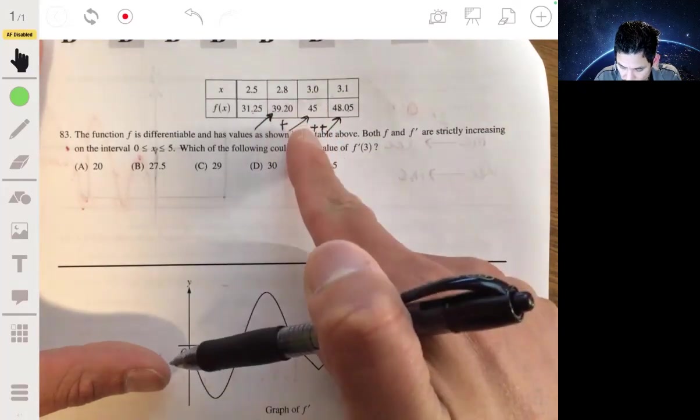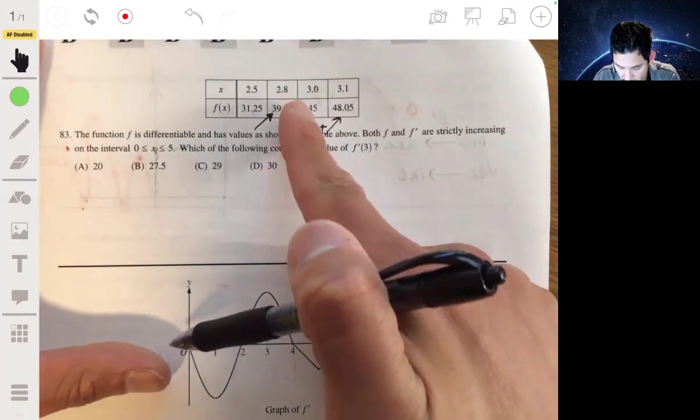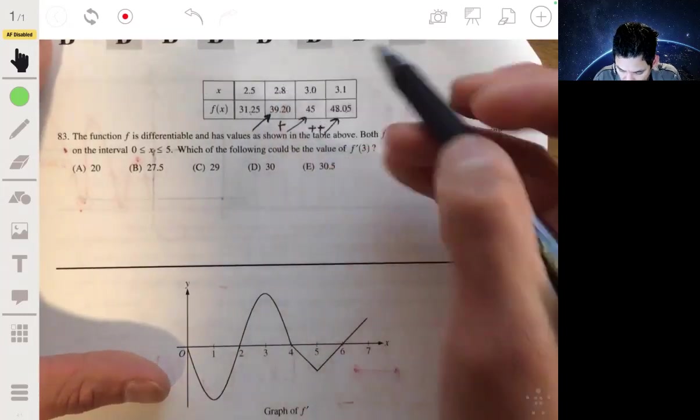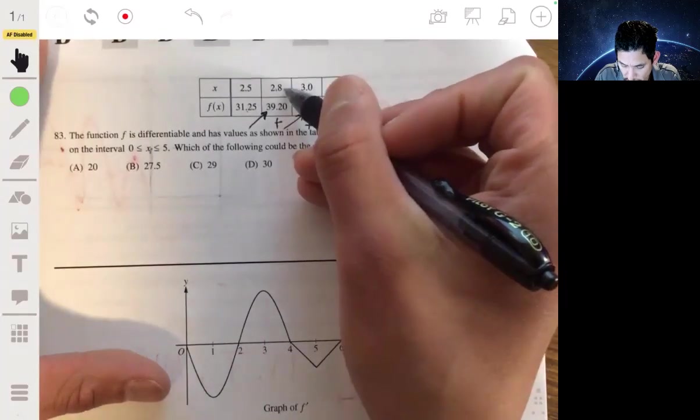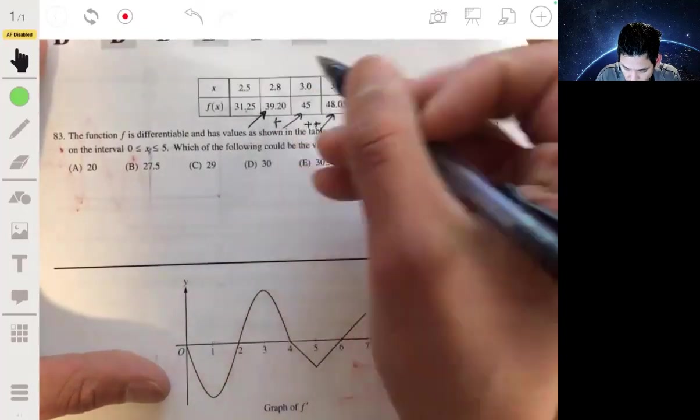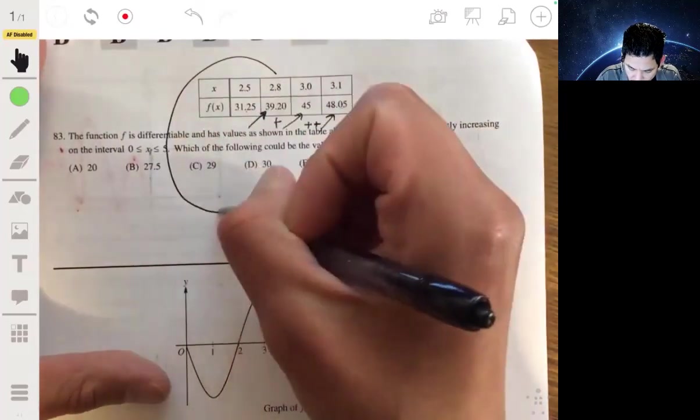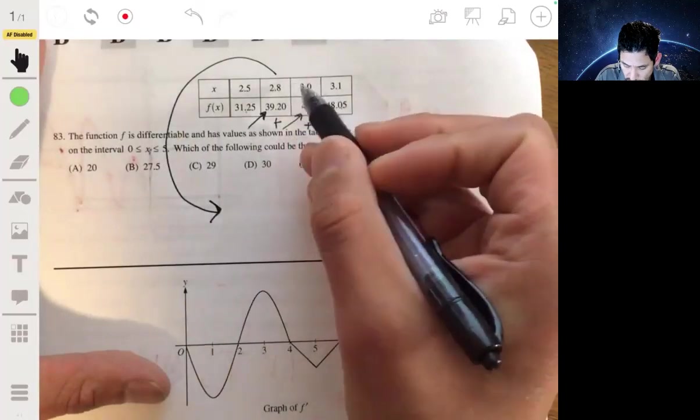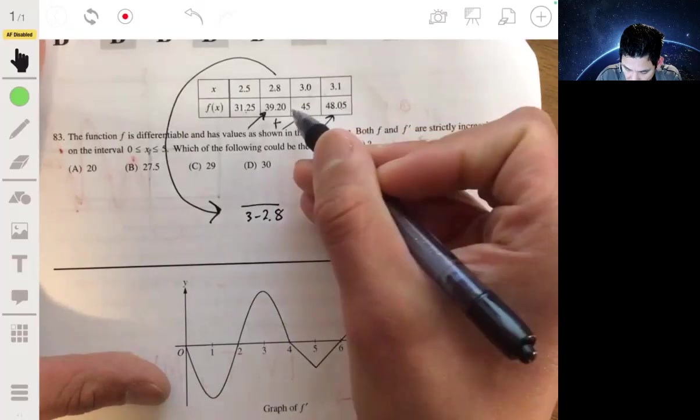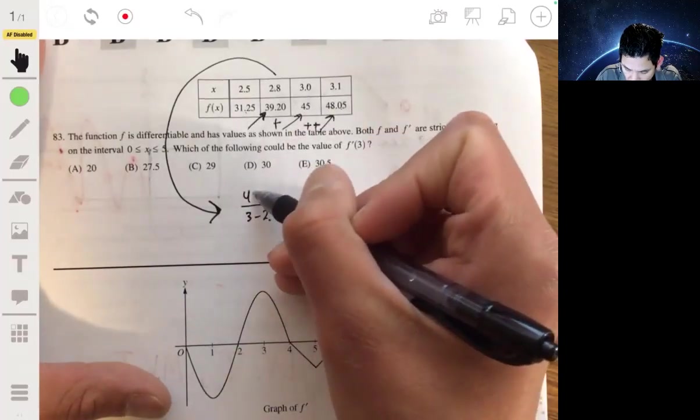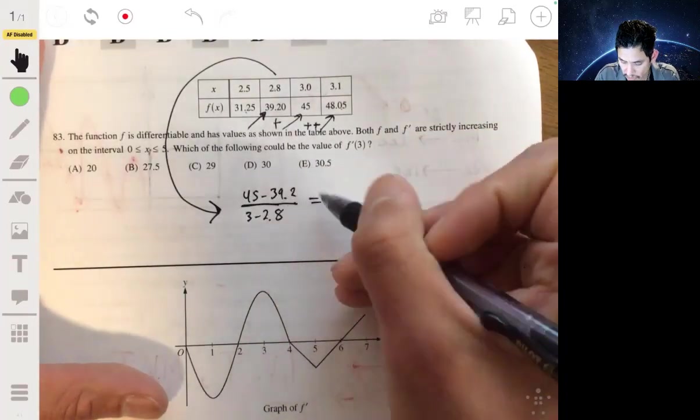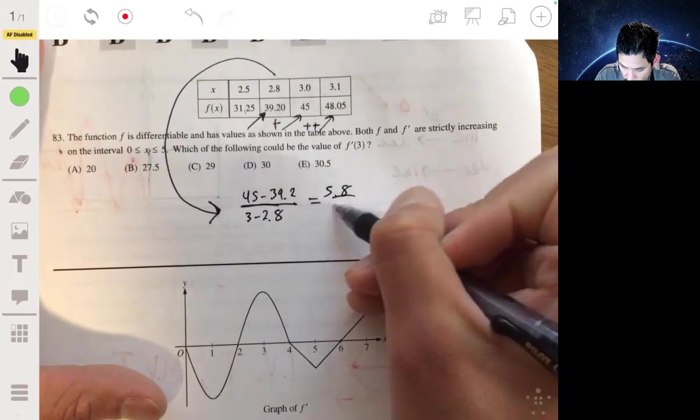From 2.8 to 3, let's use the slope formula. Slope equals change in Y over change in X: 3 minus 2.8, 45 minus 39.2. That will leave you 5.8 on top over 0.2.